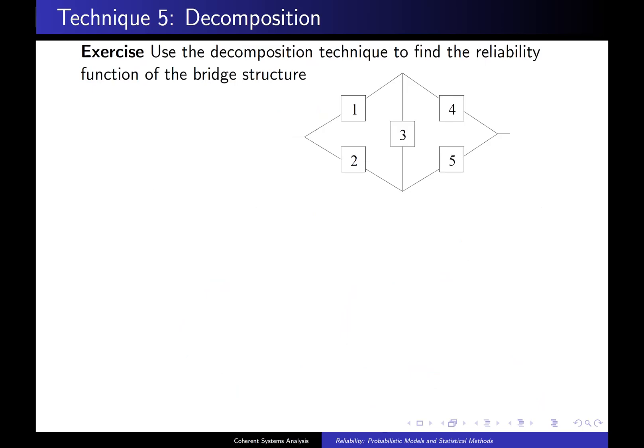Now, here is an exercise. We want to use the decomposition technique to find the reliability function of the bridge structure. So, first step is to decide which component to use as the key component. Now, as indicated earlier, sometimes you pick a key component which will make your life a little bit easier by picking one that's kind of a unique component in the system, and 3 is obviously that unique component. So, we're going to condition on the state of component 3.